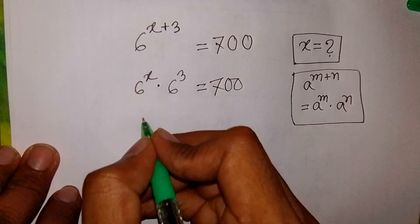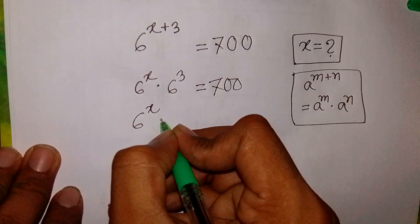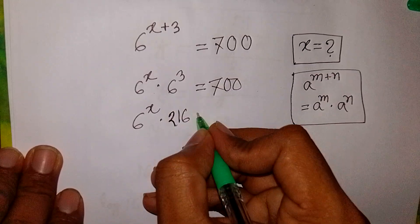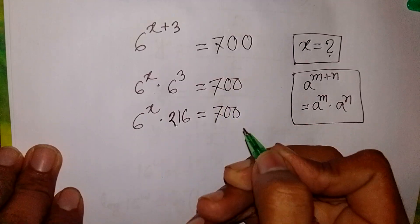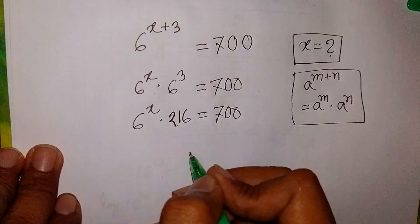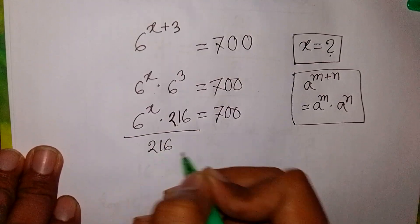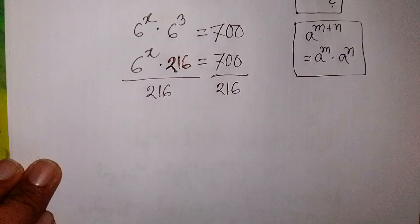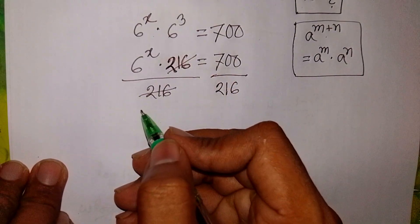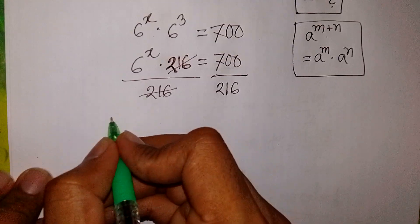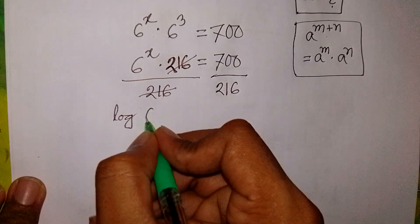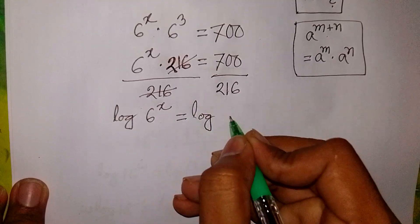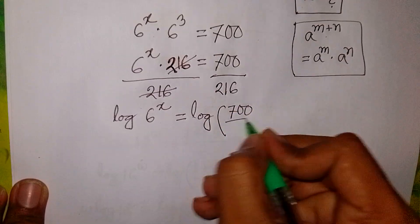Now we have 6 power x times 6 power 3, which is the same as 216, is equal to 700. We divide by 216 on both sides, so 216 cancels. Now we take log on both sides, so log of 6 power x is equal to log of 700 over 216.